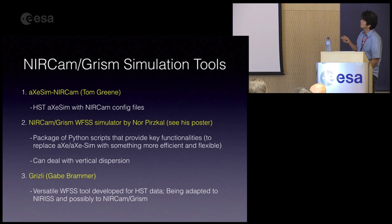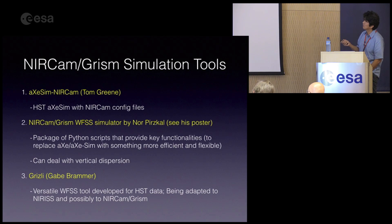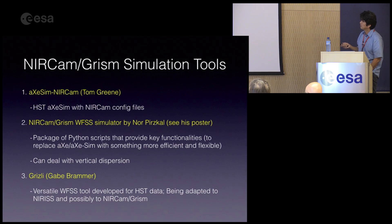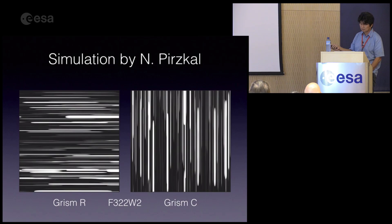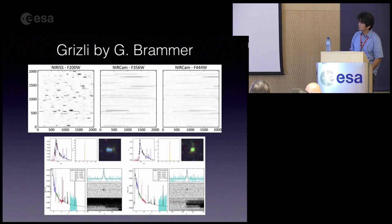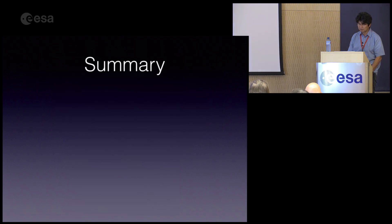There are currently three simulation tools. The first is AXISM, developed for HST with a NIRCAM GRISM configuration file — this is what I used to simulate the images shown. The second is a tool being developed by Knorr, who has a poster here. The third is Grizzly, being developed by Gabe Rammer. I've shown images from the first simulator, and also received a new image from Knorr this morning, plus Gabe Rammer's simulation.